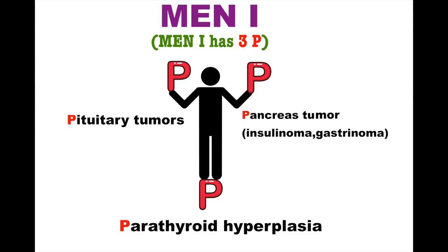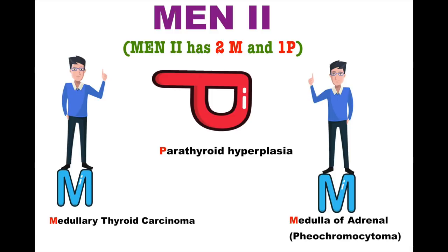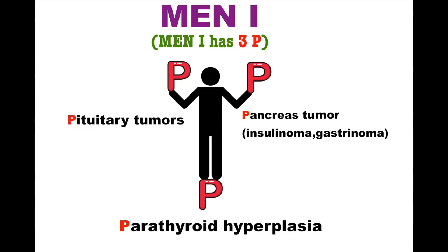The third picture is for MEN type 1. One man is standing on a P and holding 2P in his hands. So MEN type 1 contains 3P: pituitary tumour, pancreas tumours like insulinoma and gastrinoma, and parathyroid hyperplasia.